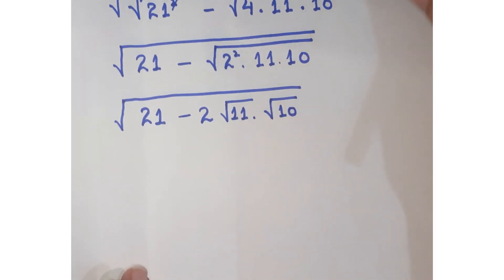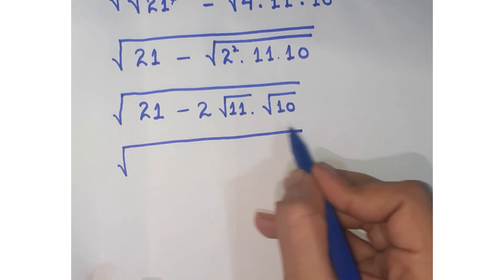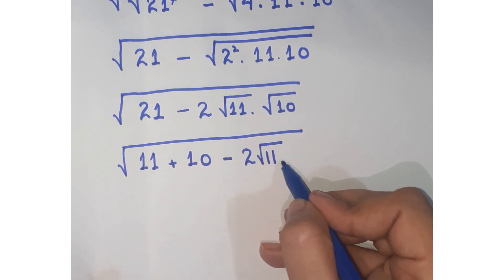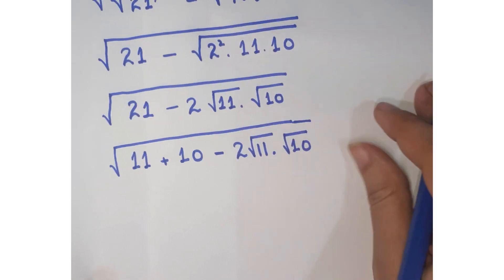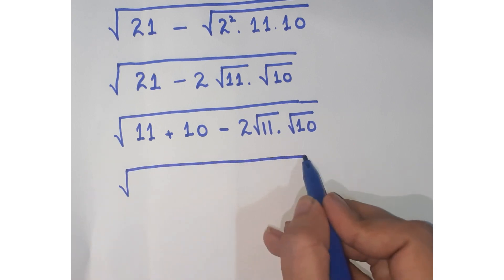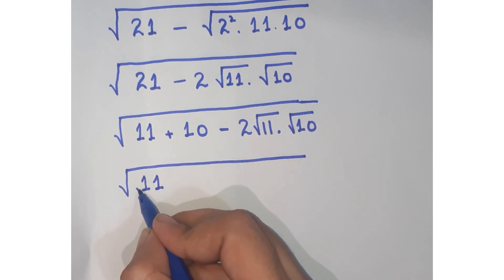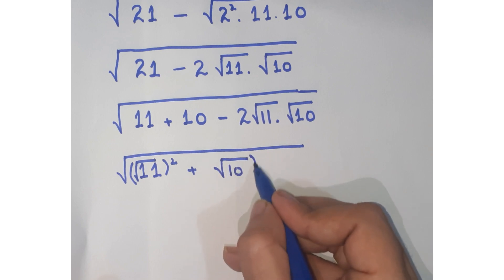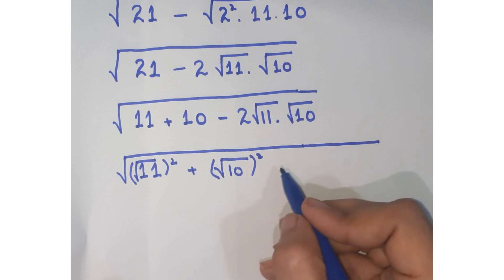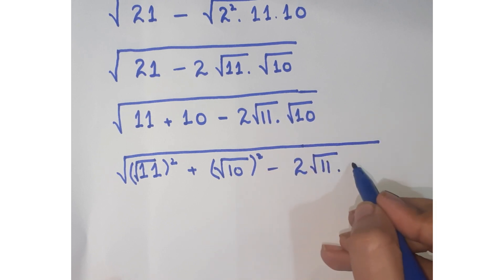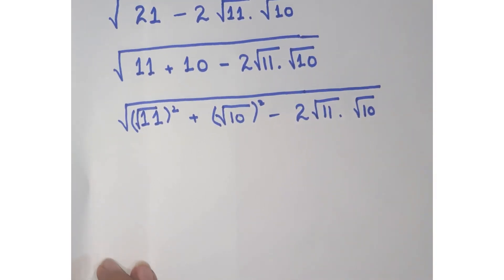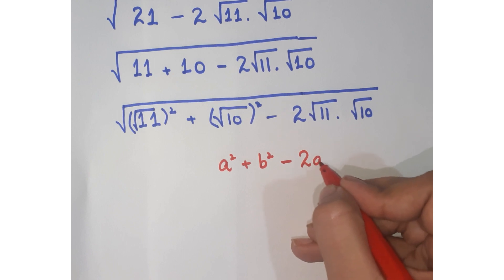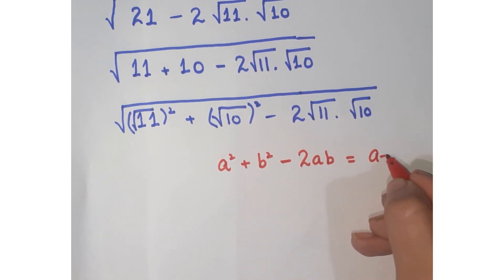Further, break up 21 into 11 plus 10. Then 11 can be written as (√11)² and 10 can be written as (√10)², giving (√11)² + (√10)² minus 2·√11·√10. Comparing this with the algebraic identity a² + b² − 2ab = (a − b)².